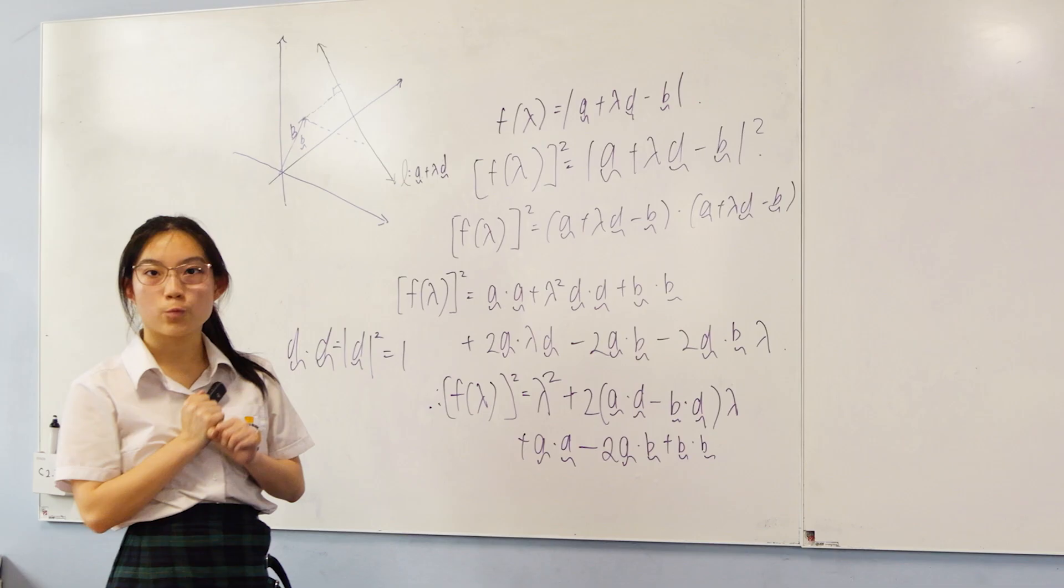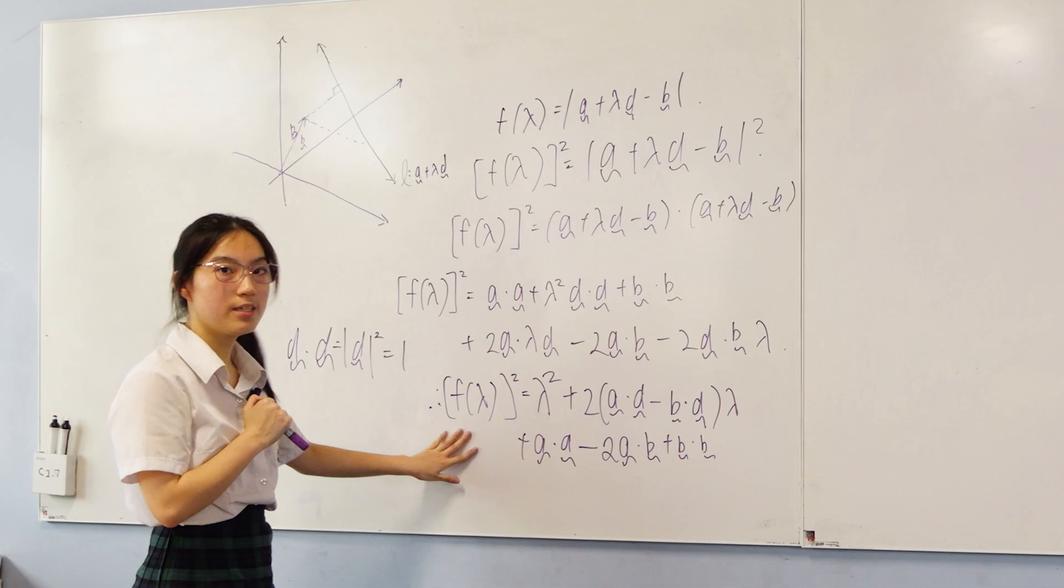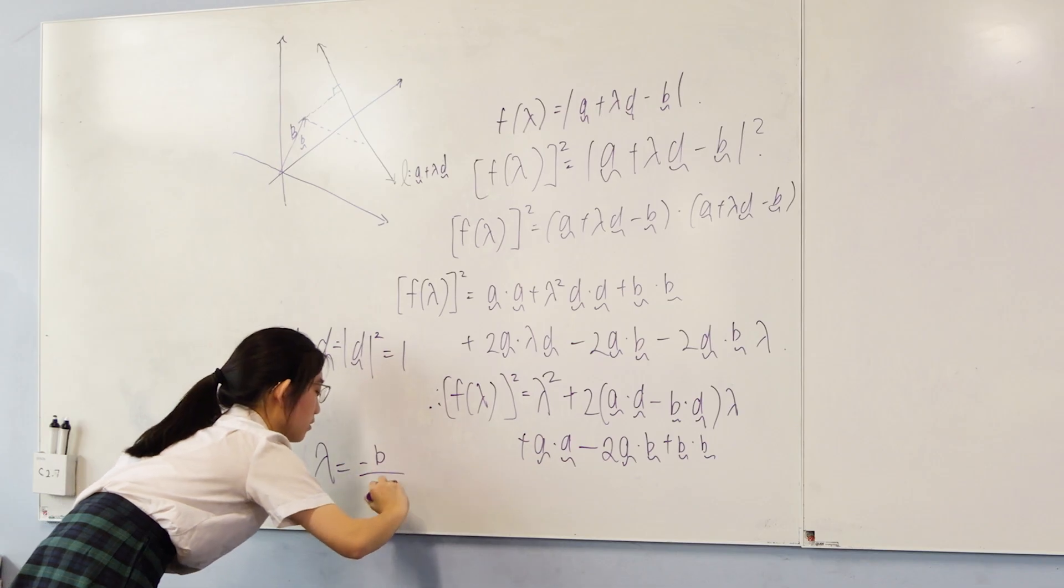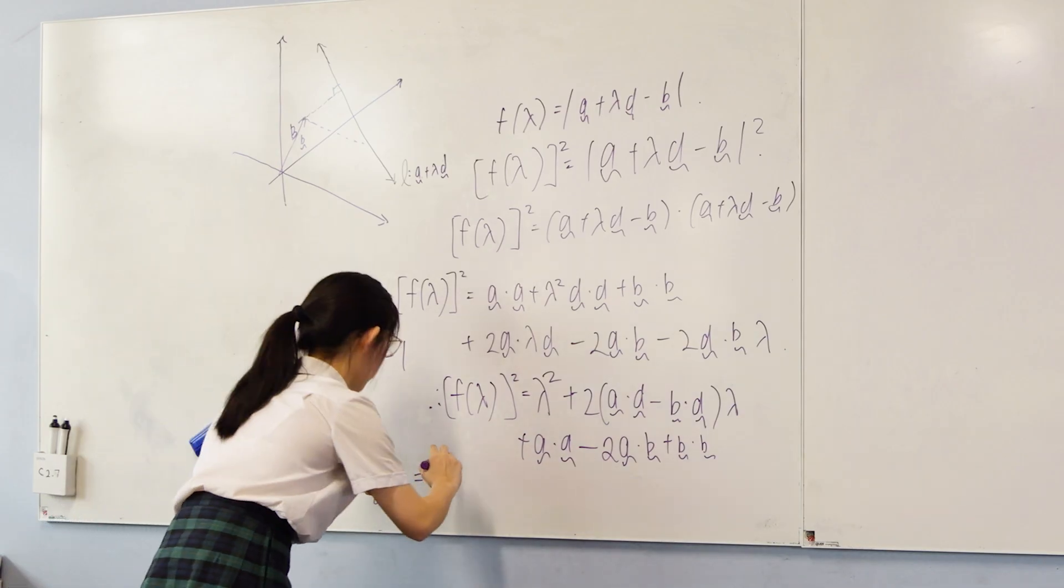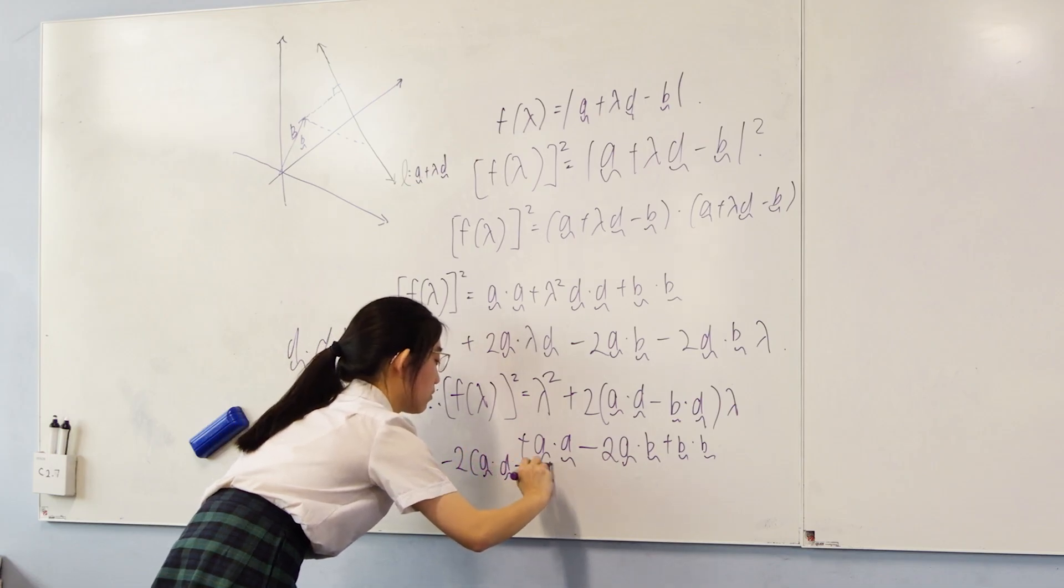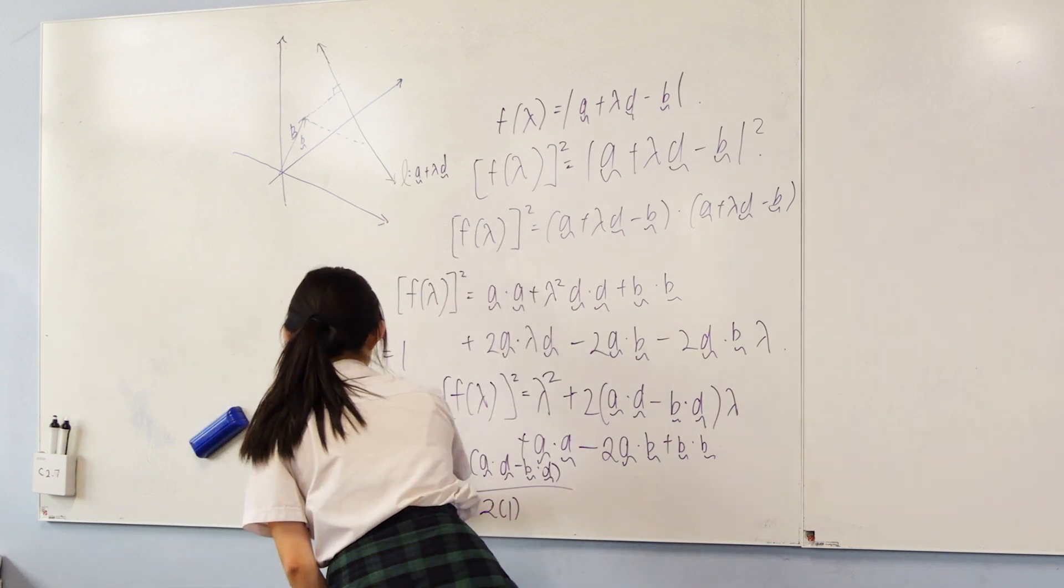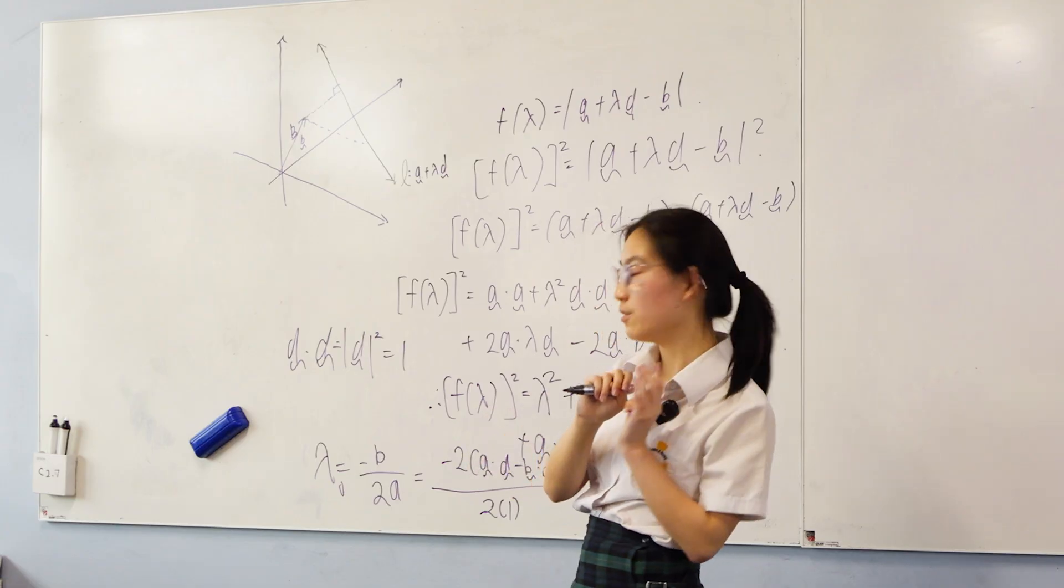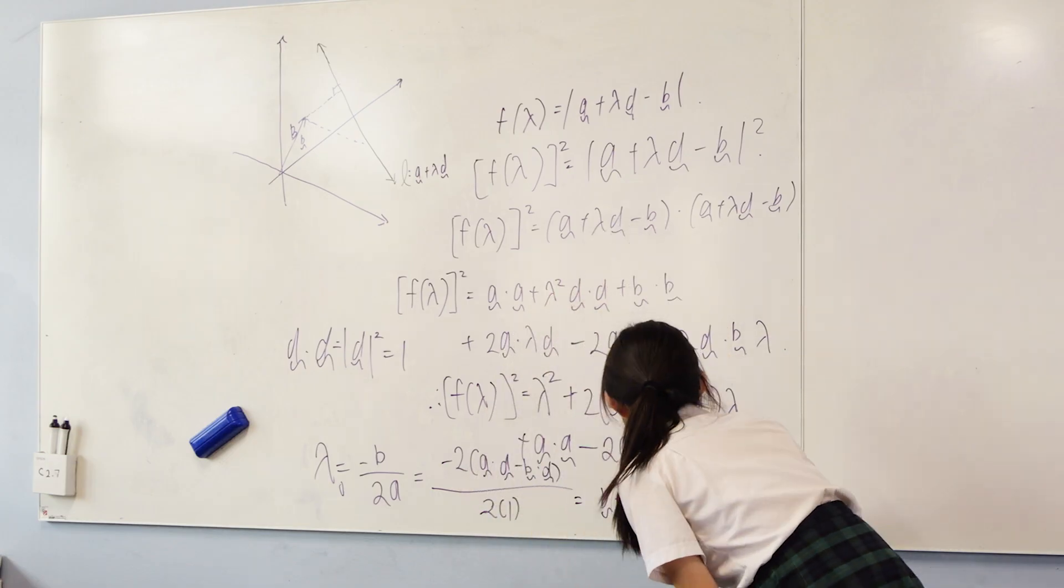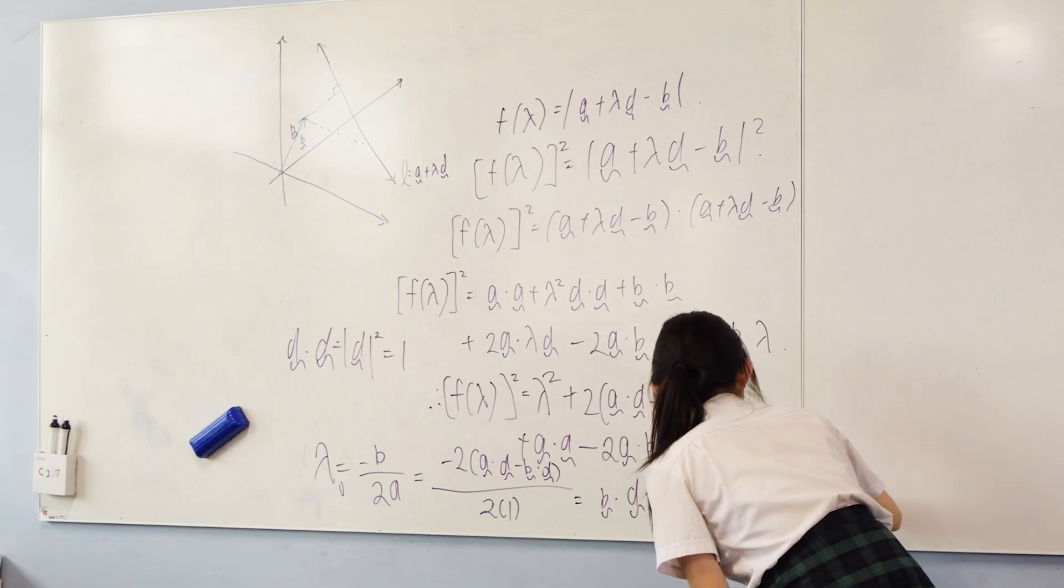Because the leading coefficient 1 is positive, this parabola is concave up. So we can minimize f lambda squared, and hence f lambda, by using lambda equals minus b over 2a. This value of lambda would correspond to lambda naught, which is what we want to find, and simplifying this will give us b dot d minus a dot d, which we can write as d dot product b minus a.